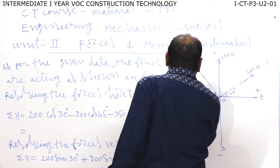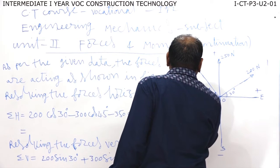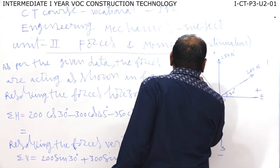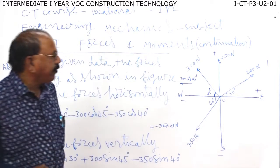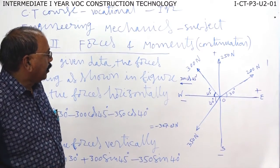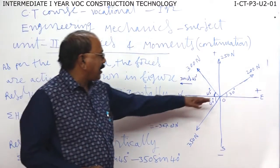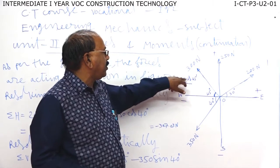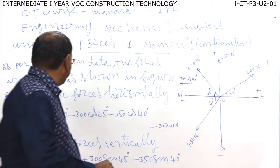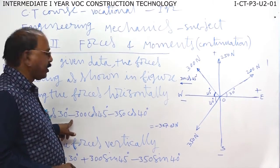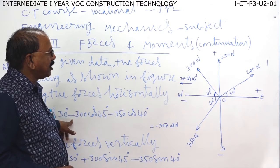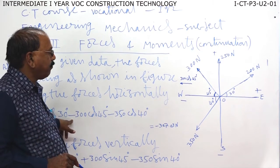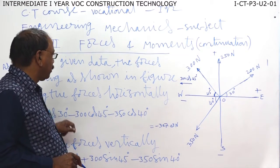For the 300 Newton force, the horizontal component is minus 300 cos 45 degrees. Because it is on the left side of the x-axis, we use minus sign convention. Same convention: right side is plus, left side is minus.